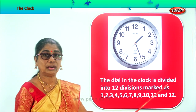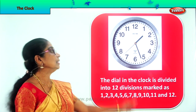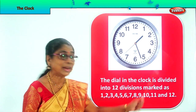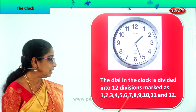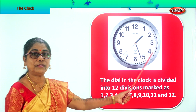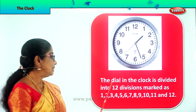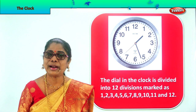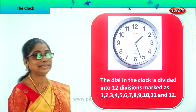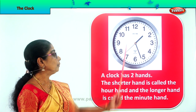The dial in the clock is divided into 12 divisions. Can you see 12 numbers? The dial in the clock is divided into 12 divisions: 1, 2, 3, 4, 5, 6, 7, 8, 9, 10, 11 and 12. On the dial of a clock, you will find 12 numbers, big and bold, you can read. 12 is on the top and 6 will be down.